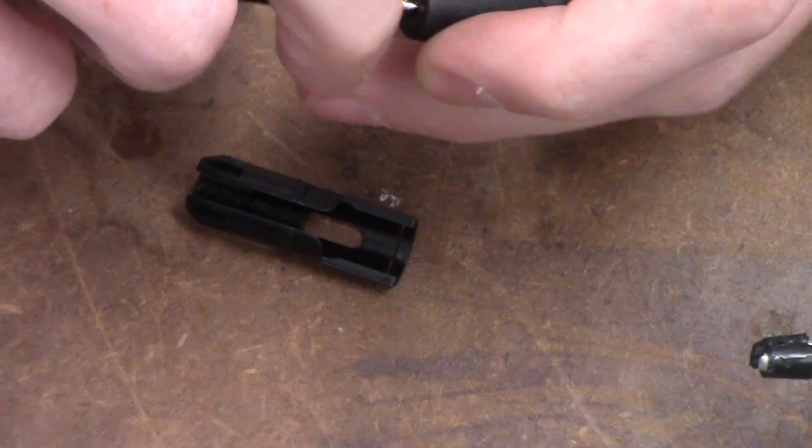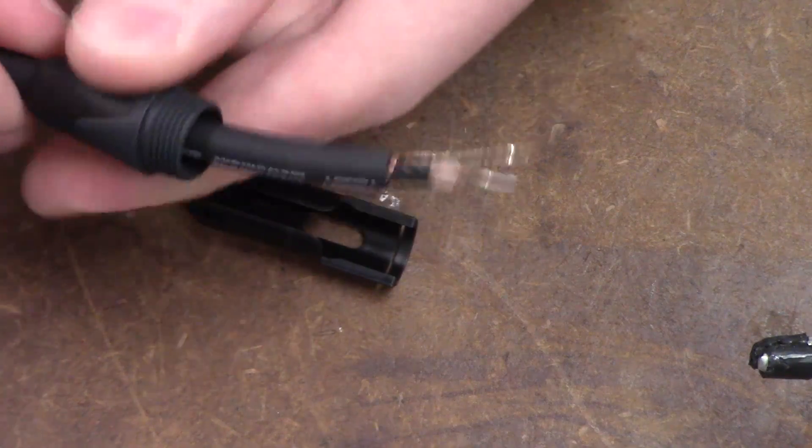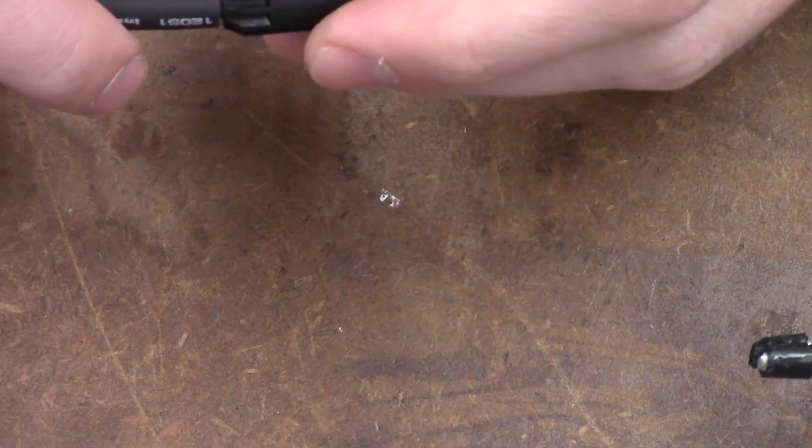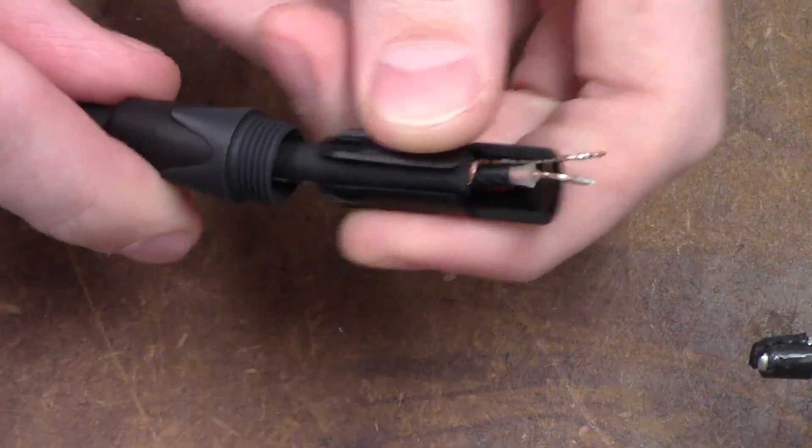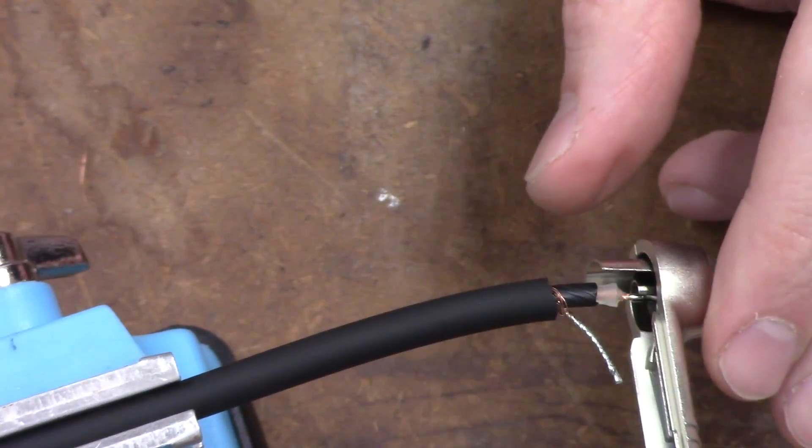Before the cable can be soldered into the plug, we need to slide the base of the plug over the cable. In this case, there are two pieces that go over the cable. Next, we are going to solder the cable to the plug.